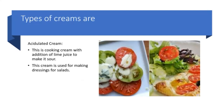Acidulated cream is nothing but cooking cream which has been mixed with lemon juice to make it sour. It is used for making dressings for salads.